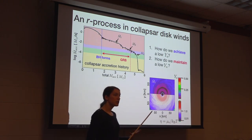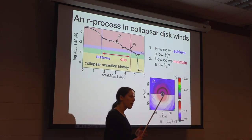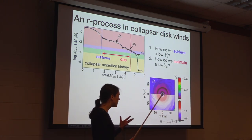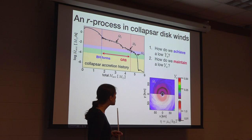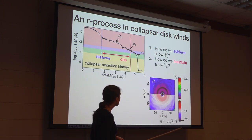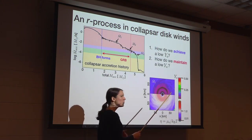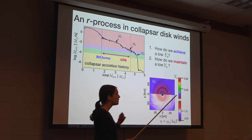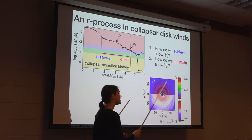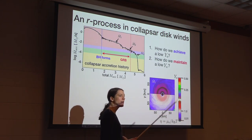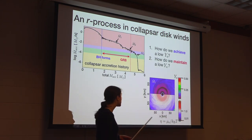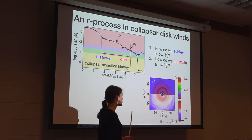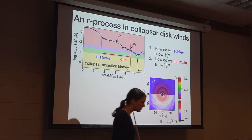This acted to suppress electron and positron pair creation, which went on to suppress positron capture. We found some high-energy electrons present in the disk, and those could be captured onto protons, driving the disk towards neutron-rich conditions.